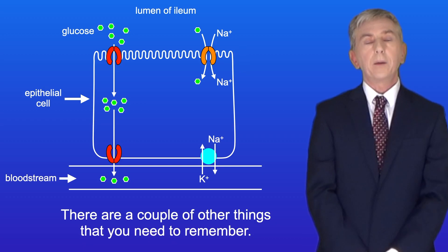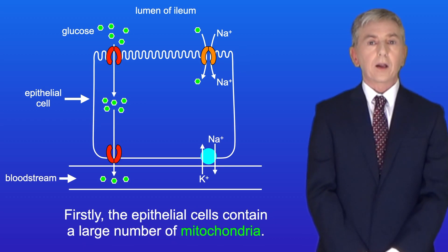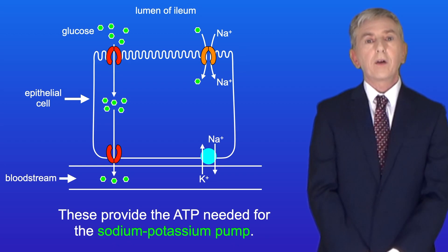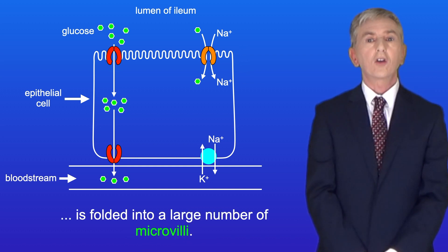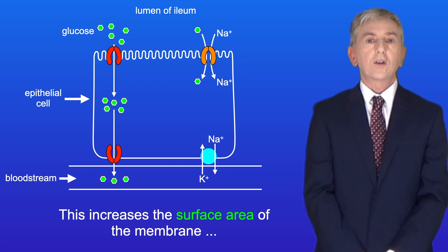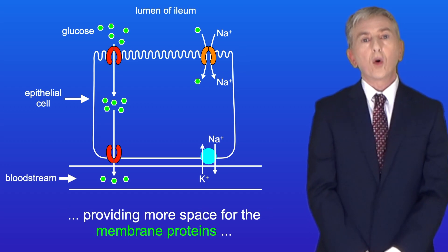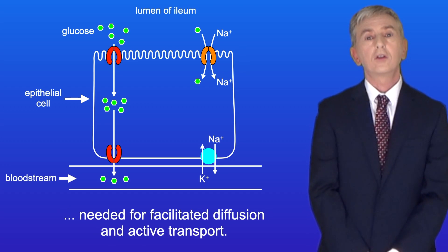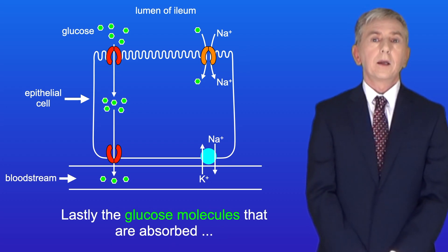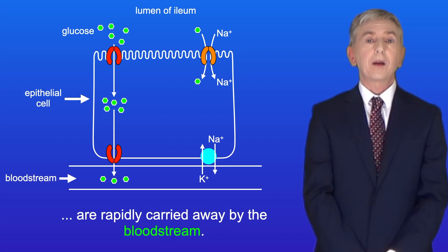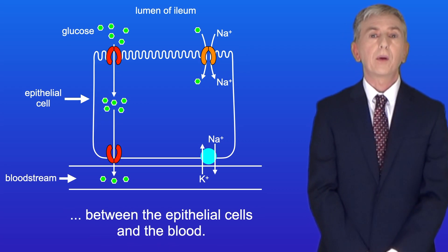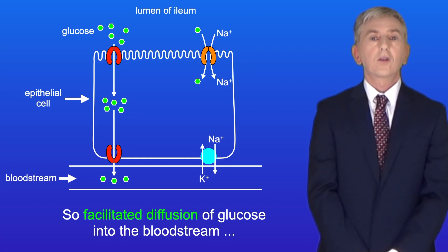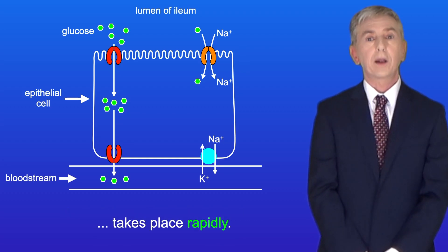There are a couple of other things to remember. Firstly, the epithelial cells contain a large number of mitochondria, which provide the ATP needed for the sodium-potassium pump. Secondly, the membrane of the epithelial cells is folded into a large number of microvilli, which increases the surface area of the membrane, providing more space for the membrane proteins needed for facilitated diffusion and active transport. Lastly, the glucose molecules that are absorbed are rapidly carried away by the bloodstream, meaning there is a steep concentration gradient between the epithelial cells and the blood, so facilitated diffusion of glucose into the bloodstream takes place rapidly.